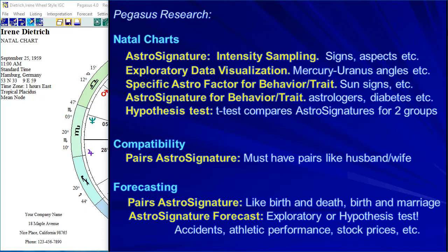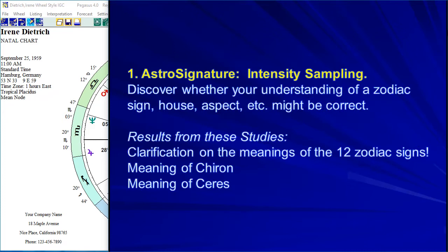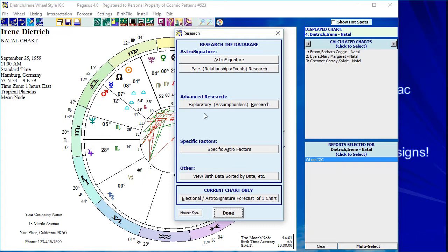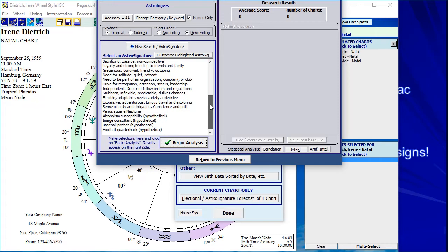There's also compatibility research and two kinds of forecasting, covering the basic things we do in astrology. Now let's talk about intensity sampling. It's a term used by research experts that just means you're picking out the charts of people who have the most of something. So if you want to know what Aries means, you tell the software to give you the people that have the most Aries. You click on the Research button and you'll see the research options, then go to Astro Signature.